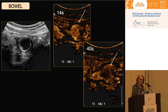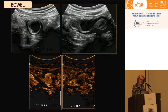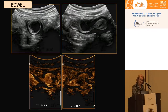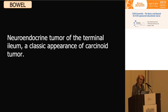We do contrast enhancement and can see that the mass is hyper-enhancing at 14 seconds and washed out by 40 seconds. I think it looks like a neuroendocrine tumor and the contrast enhancement makes me think this is malignant. This is in fact a neuroendocrine tumor of the terminal ileum — a classic appearance of carcinoid tumor — and this is a malignant tumor.